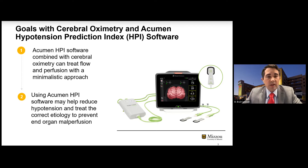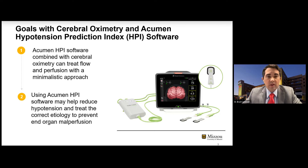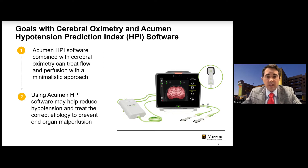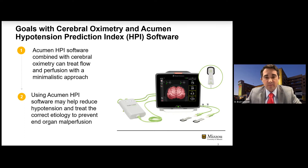We're going to use the Acumen HPI parameter to reduce hypotension. As mentioned, hypotension itself can be bad — the comorbidities that come along with it are extreme, especially in our population of cardiac surgery. It really doesn't take a lot of hypotension to get those comorbidities. I always teach my residents that we shouldn't wake a patient up at the end of the day and say the patient woke up, we did our job, and give ourselves a pat on the back.